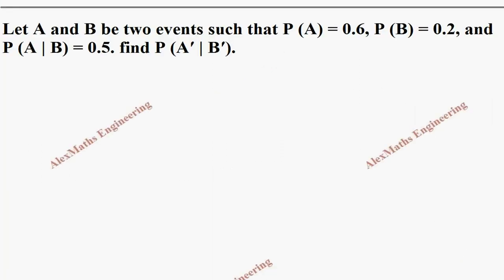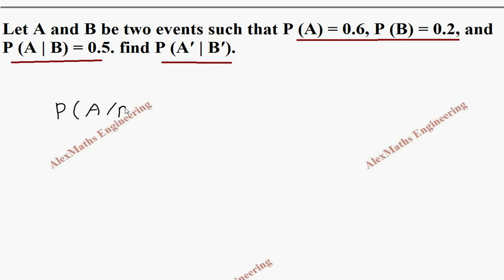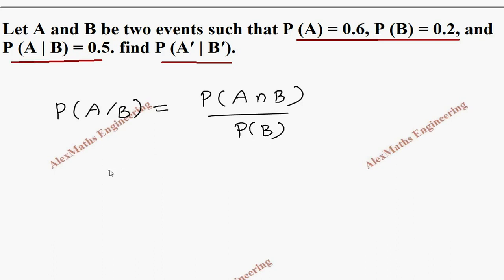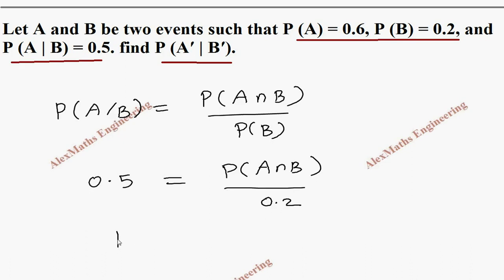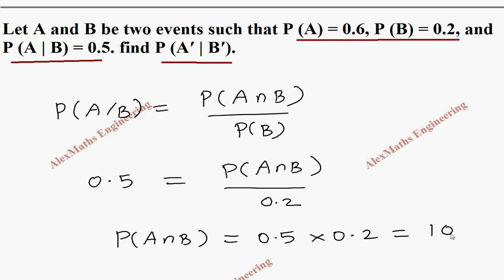Coming to the next one, they have given the values of P of A, P of B, and P of A given B. We have to find P of A dash given B dash. Starting from the given: P of A given B by formula equals P of A intersection B divided by P of B. This value is 0.5 and P of B is 0.2. By cross multiplication, P of A intersection B equals 0.5 into 0.2, which is 0.1.